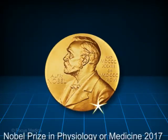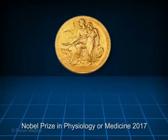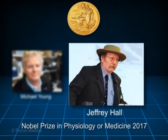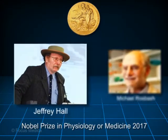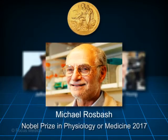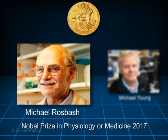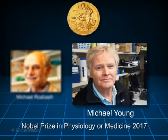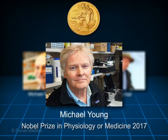The Nobel Prize for Physiology and Medicine for 2017 is shared by Jeffrey Hall and Michael Rosbash of Brandeis University and Michael Young of Rockefeller University for their discoveries of molecular mechanisms controlling the circadian rhythm.